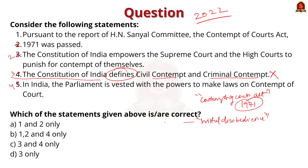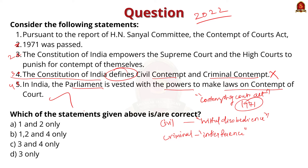Criminal contempt can be invoked if an act tends to scandalize or lower the authority of the court, or tends to interfere with the due course of any judicial proceeding or obstruct the administration of justice. The fourth statement — that Parliament is vested with the power to make laws on contempt of court — is correct. So the correct answer is option B: one, two, and four. The power of courts to protect their own majesty is regulated but not restricted in the Contempt of Courts Act 1971, passed on the recommendations of the H.N. Sanyal Committee.